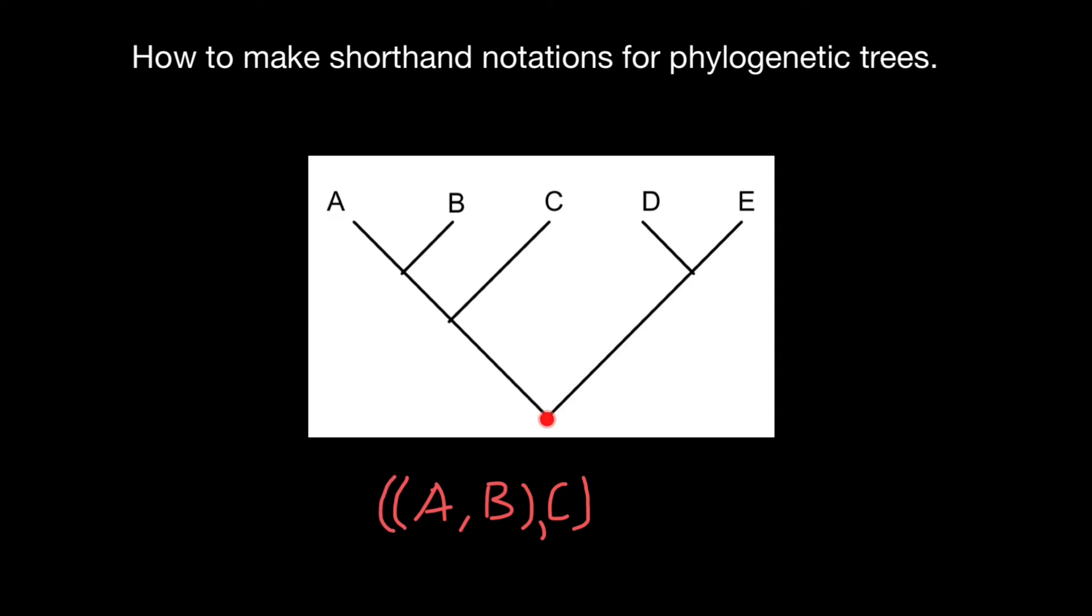And what about this branch? So we have species D and E, or taxon D and E, and in this case we open new parenthesis and put D comma E and close parenthesis.